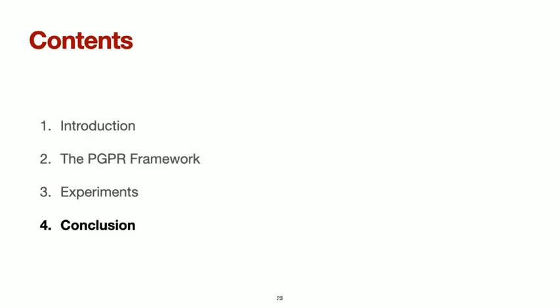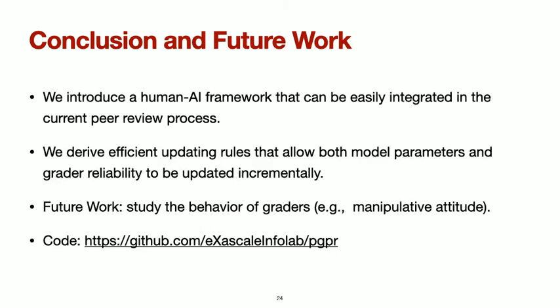Finally, to conclude: we introduced a human-AI collaborative approach that can be easily integrated into the current peer review process to check the conformity of scholarly reviews. We derive efficient updating rules that allow both model parameters and grader reliability to be updated incrementally. As future work, we plan to study the behavior of graders, for example, how to account for manipulative behavior. Our code is available online through the provided GitHub link.